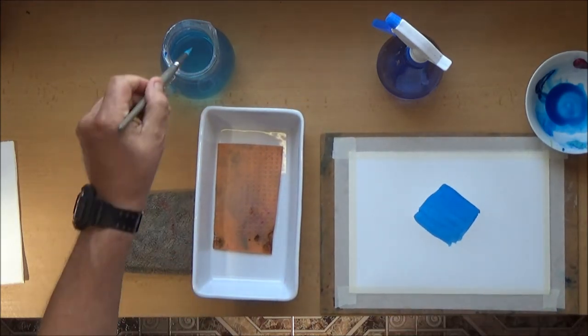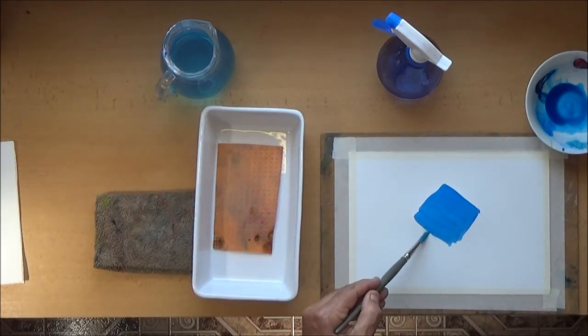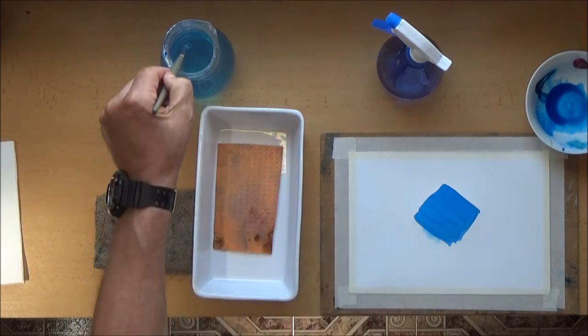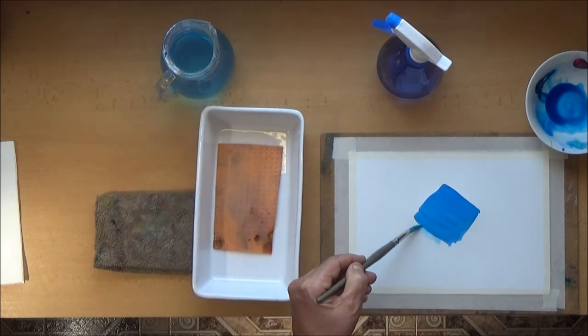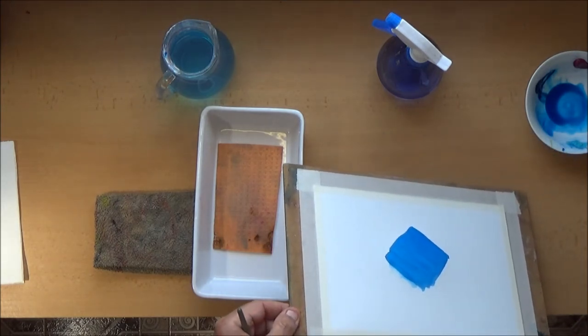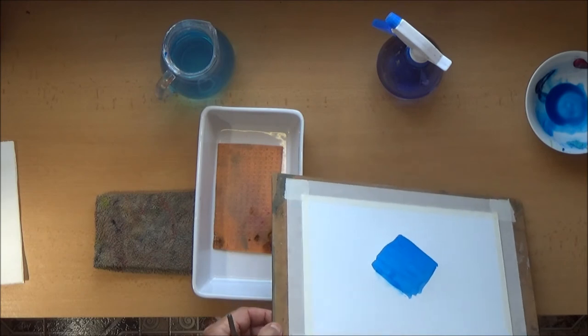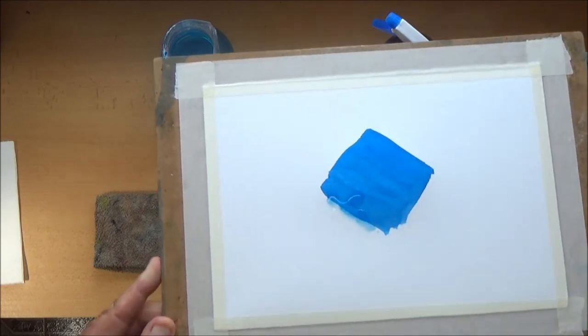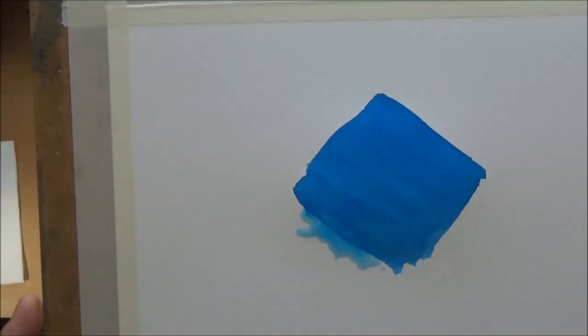So this wash is drying. Let's add some water to it. Let's see what happens to that. This is most beginners' solution to the problem of overworking. And what happens is as that water goes into that drying wash, it forms into a hard edge mark, which is called a cauliflower.